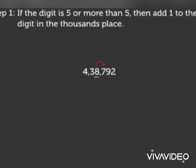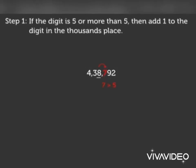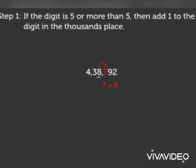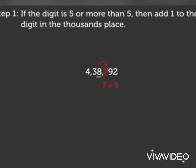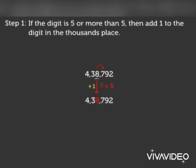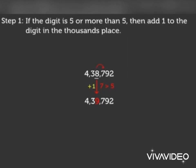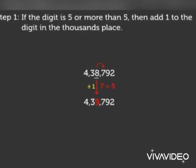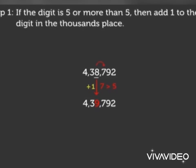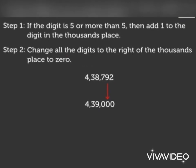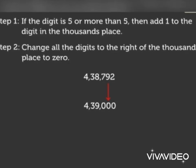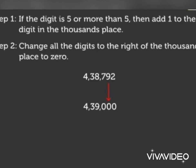Here, the digit at the thousand place is 8 and the digit to the right is 7. Since the digit is 5 or more than 5, we add 1 to the digit in the thousand place. So 8 becomes 9, and it becomes 4,39,792. The next step is to change all the digits to the right of the thousand place to 0. So it becomes 4,39,000.